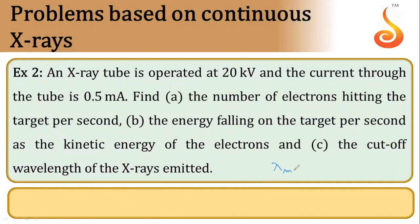The cutoff or minimum wavelength formula we have already discussed is hc by e into V. Now we just need to substitute the values. The product of hc in electron volts is 1242 nanometer electron volt, divided by e into voltage.